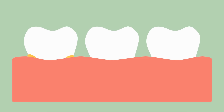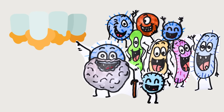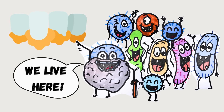The tooth loss process starts with the formation of plaque. Plaque is a soft and yellowish biofilm containing bacteria within a thick matrix made from glycoproteins and extracellular polysaccharides.